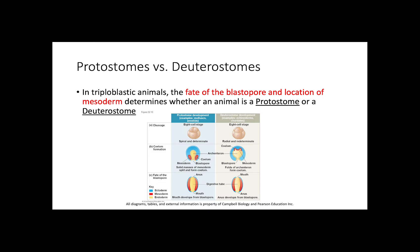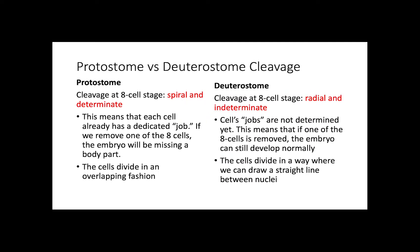Looking at this figure, there are three different ways that protostomes can be differentiated from deuterostomes. The first of which is cleavage. Cleavage at the eight-cell stage in protostomes is going to be spiral and determinate. Cleavage at the eight-cell stage in deuterostomes is going to be radial and indeterminate.